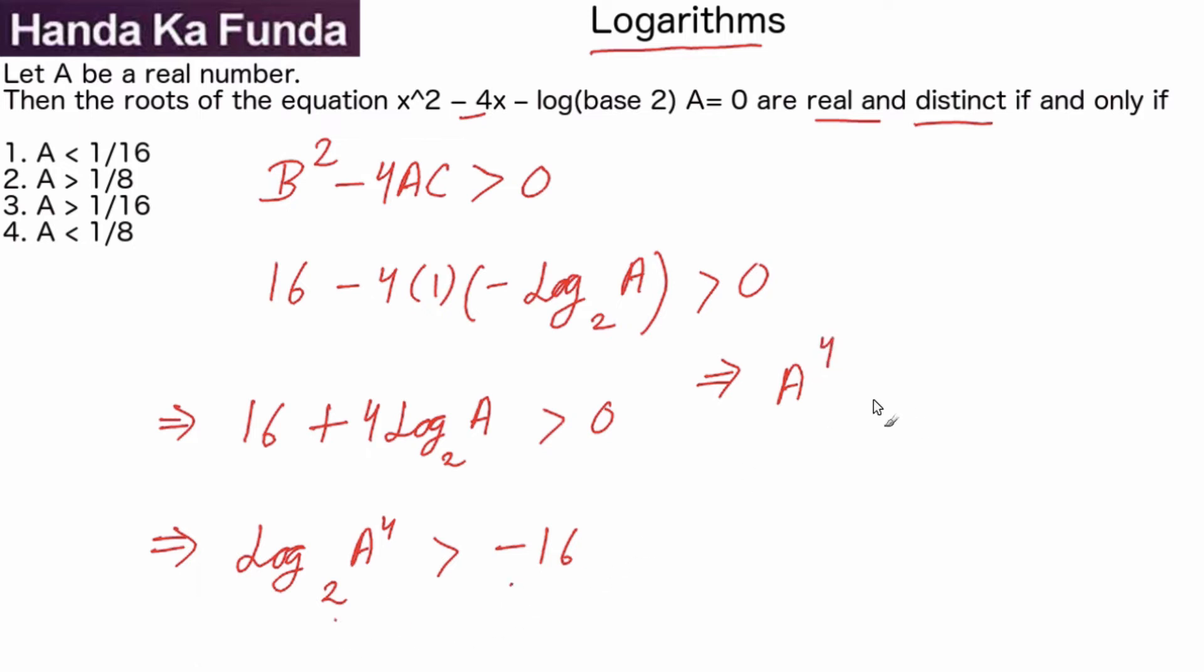Taking the fourth root, A > 2^(-4). And what is 2^(-4)? 2^(-4) is nothing else but 1/16. So I get A > 1/16.